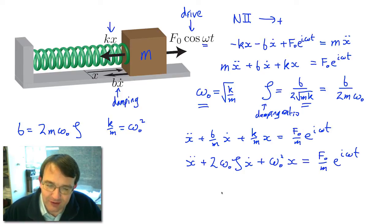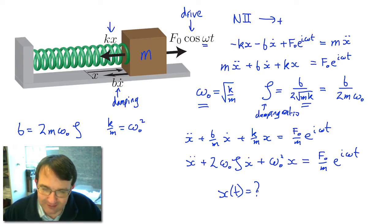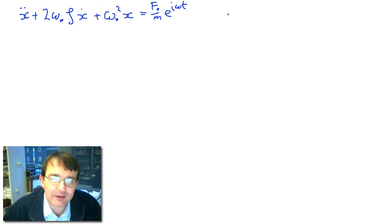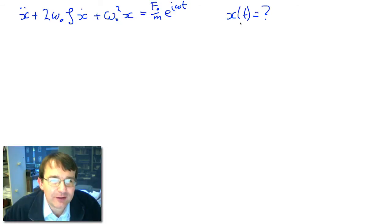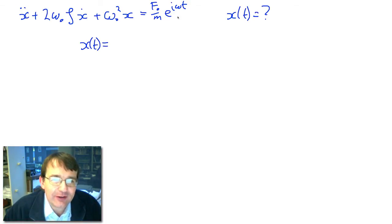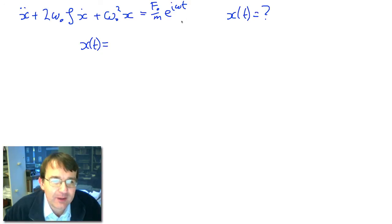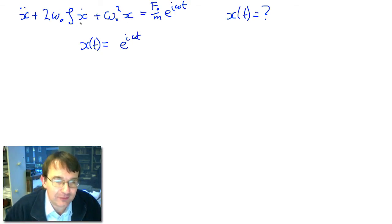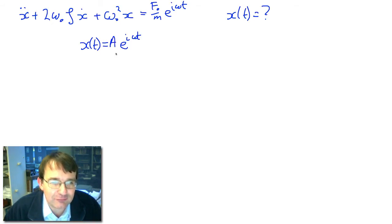We still need to find x(t). We make an intelligent guess: since the right-hand side has e^(iωt), and differentiation preserves that form, we try x = A·e^(iωt) with real amplitude A. Differentiating gives ẋ = iωA·e^(iωt) and ẍ = −ω²A·e^(iωt).